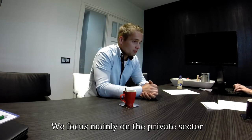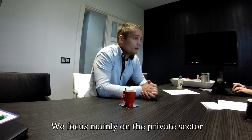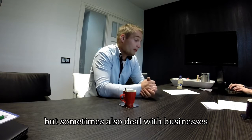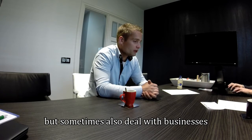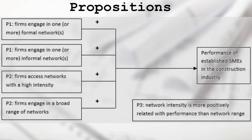We focus on the particular building, so we work on our own business. We make a distinction between formal networks and informal networks. Informal networks consist of strong ties and are generally not costly to access, like for example family and friends. Formal networks include weaker ties and are more expensive to access, for example insurance advisors.